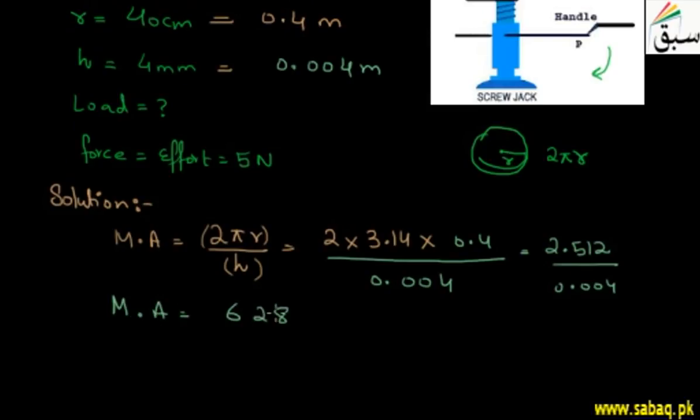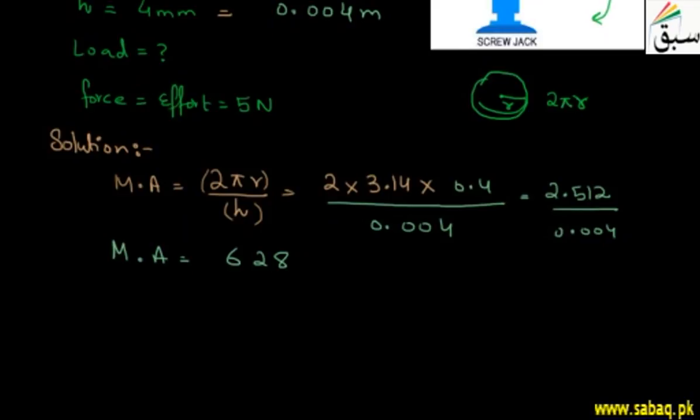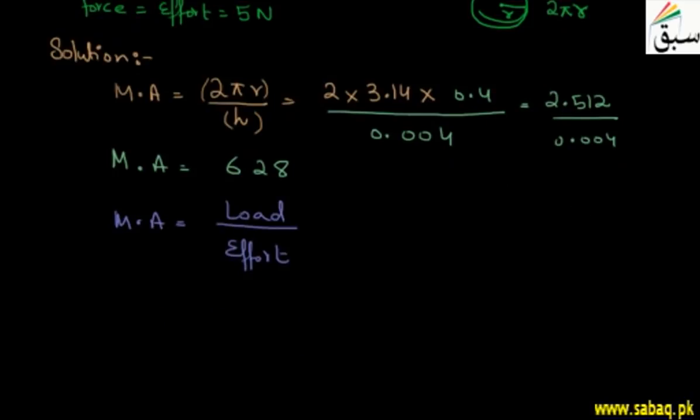628. So students, we have found mechanical advantage. Mechanical advantage we didn't have to find out initially, but we have to find it out because this reason I will tell you that mechanical advantage is the general formula: load divided by effort. Now if we want to find out load, if I have mechanical advantage known and effort also known, so load is easily found out.